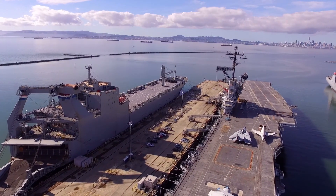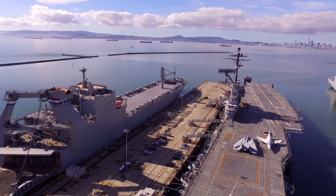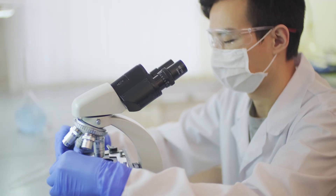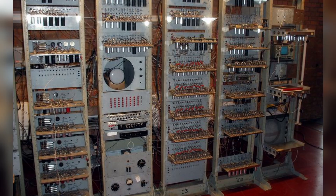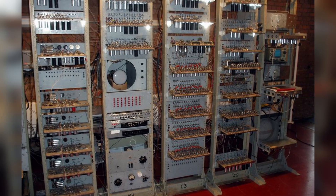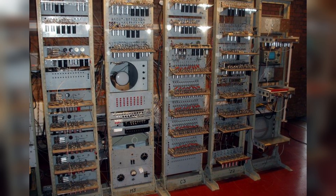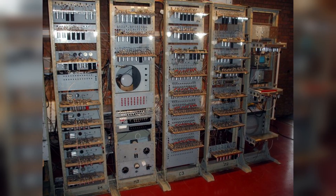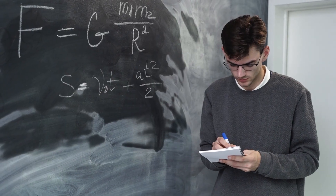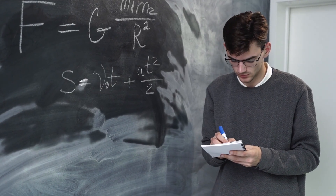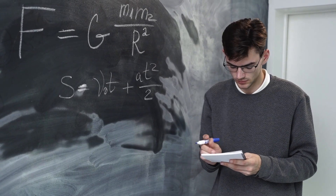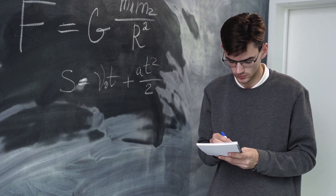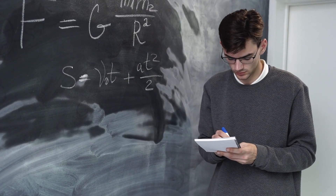It quickly became clear that electronic computers had many other potential uses, and researchers began to explore new applications. One of the earliest electronic computers to be used for scientific research was the Manchester Mark I, built in England in 1949. The Manchester Mark I was a smaller, more affordable machine than ENIAC, and it was used for a wide range of research projects in fields such as biology, physics, and chemistry.